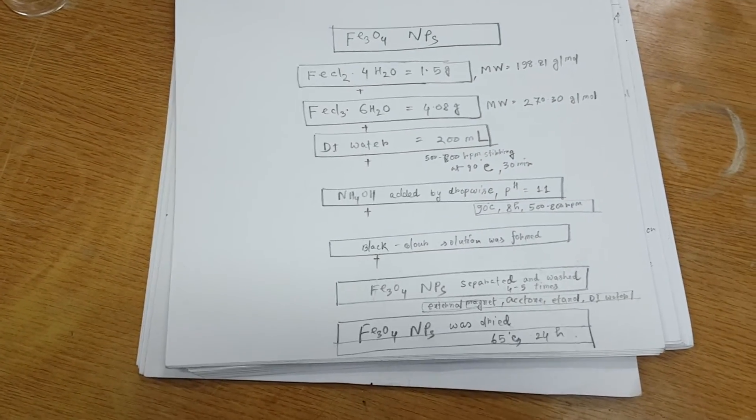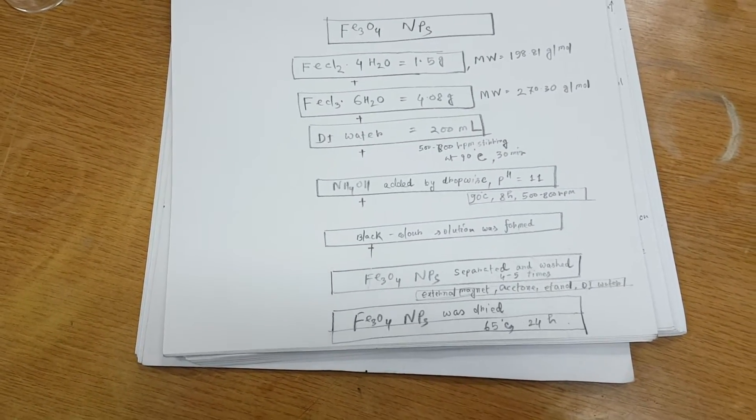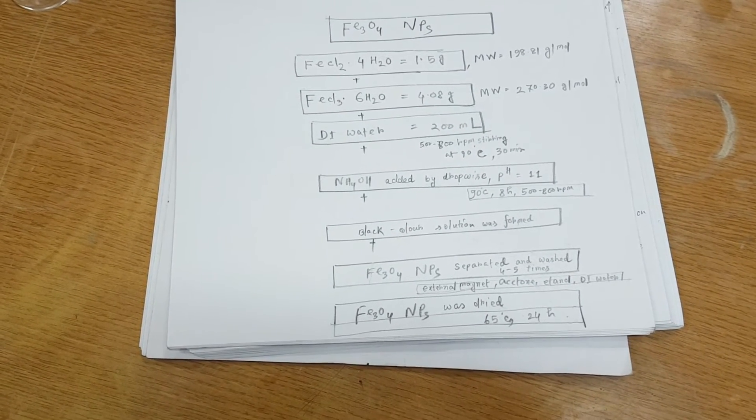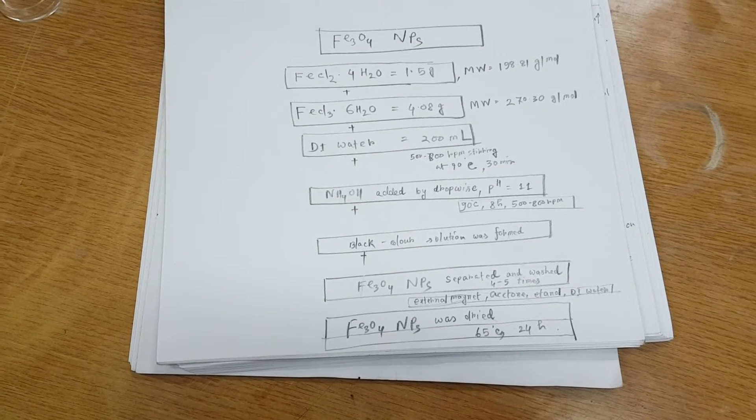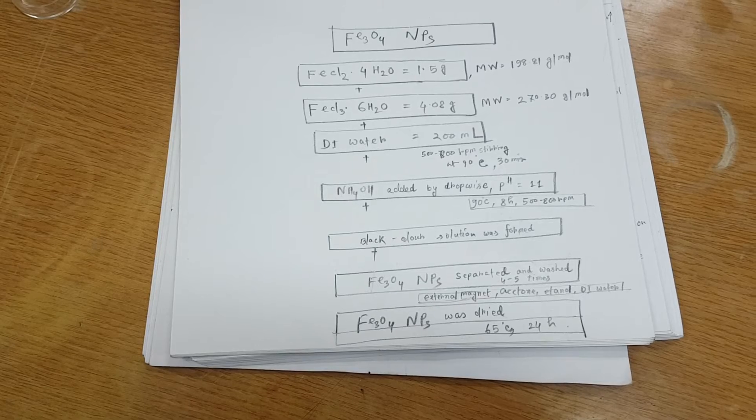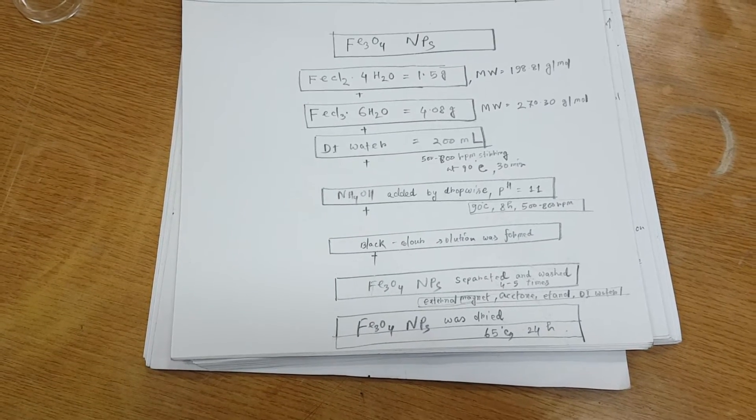At that time, dark solution was formed. And after that, the iron oxide nanoparticles was separated by the external magnet and then it is followed by the washing and cleaning by ethanol and acetone and then DI water.